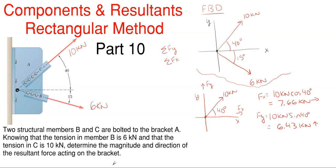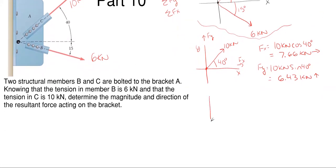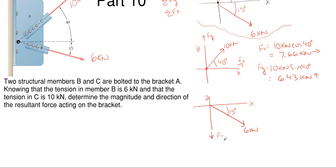Let's repeat that process for the 6 kilonewtons. It is acting down and to the right, and it is 15 degrees below the x-axis. So the x and y components for the 6 kilonewtons of force have to match the general direction — since the 6 kilonewtons is down and to the right, Fy will have to be down and Fx will have to be to the right.